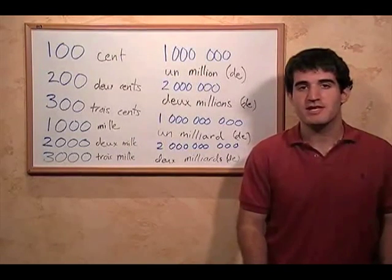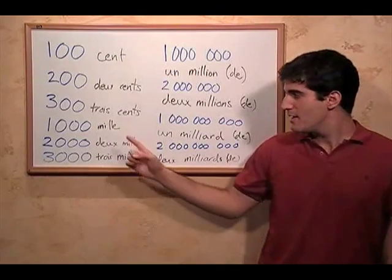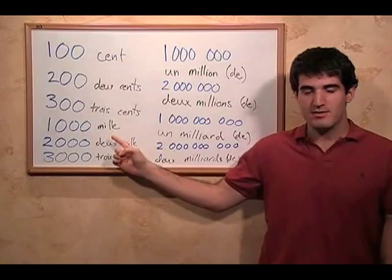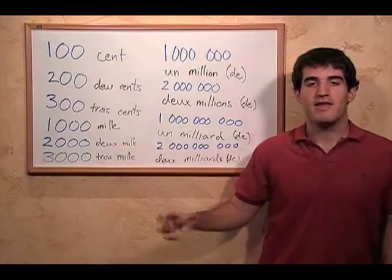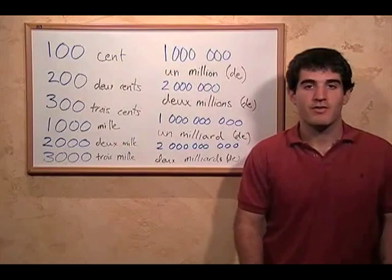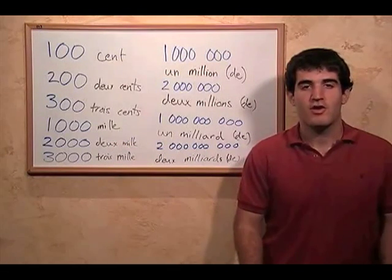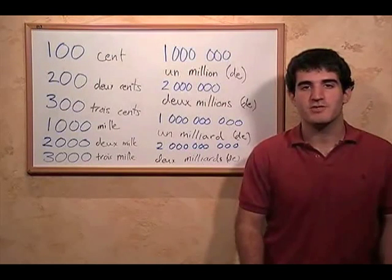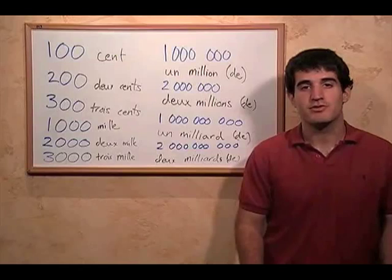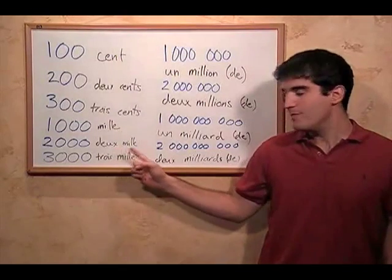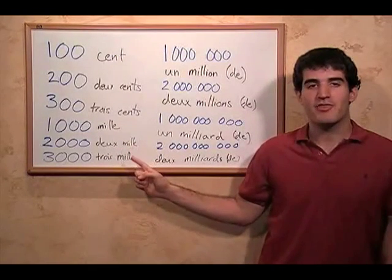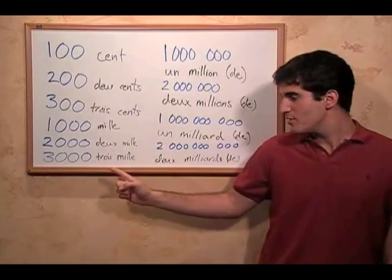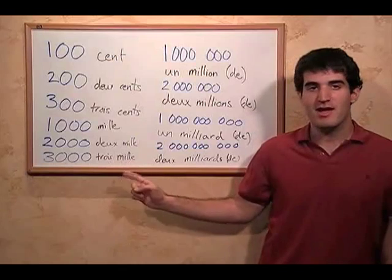A thousand is mille. And like with a hundred, when we're talking about more than one thousand, we put the number of thousands before the word mille. So two thousand is deux mille, and three thousand, trois mille, and so on.